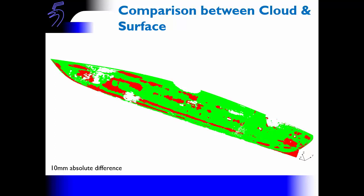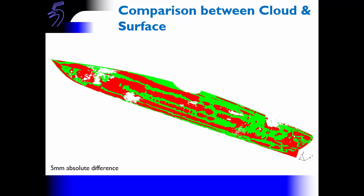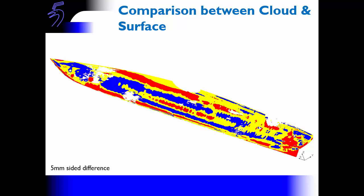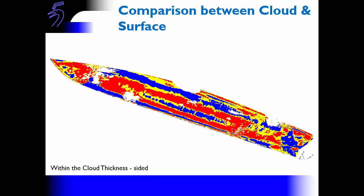We need to think about how to display this data, and the ideal way is to go for the most graphical way possible. This image shows the megayacht with the green area within a 10mm absolute tolerance, and red areas are areas of the surface outside of that. Areas that are clear are areas where the survey scan data doesn't support the conclusion because there isn't enough data. Once we've calculated these statistics, we can analyse at different levels of tolerance — if we reduce the tolerance to 5mm, we can see we've got a lot more red areas. If we take account of which side the surface is on, we see the scenario described previously where the surface is oscillating from one side of the cloud to another. Looking at that sidedness with respect to the thickness of the cloud, we can see the cloud is actually much thinner than the oscillations in the surface itself.